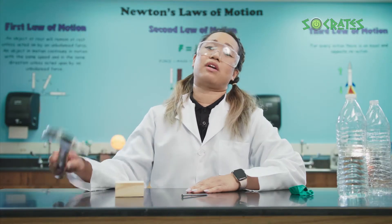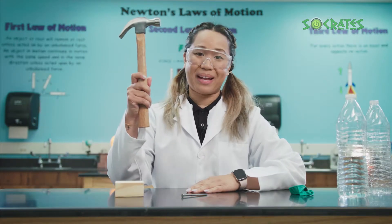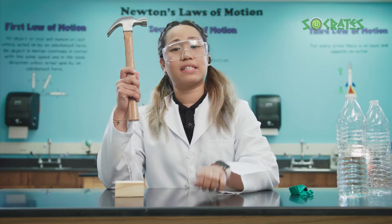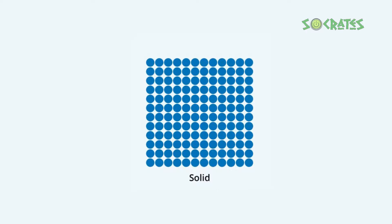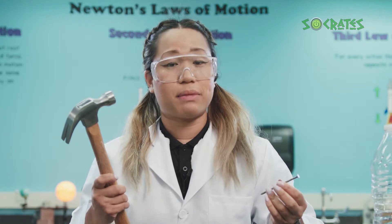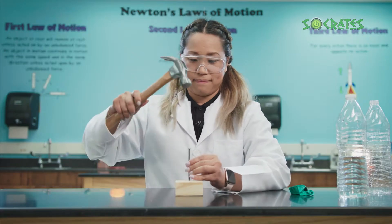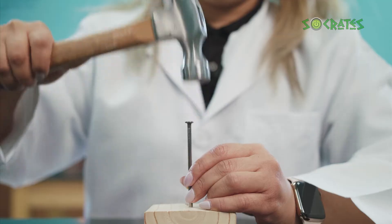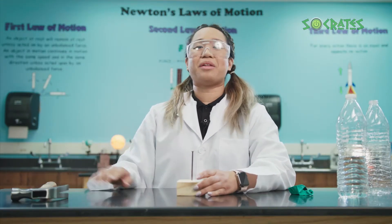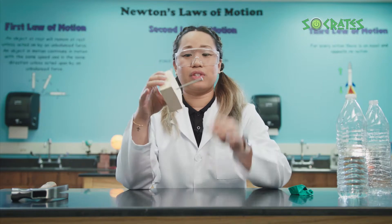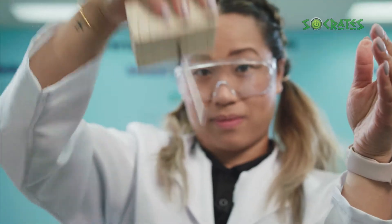First, we're going to use the model of a solid metal hammer and a nail to discuss the particles in a solid. Solid, hard materials are made of atoms that are very attracted to each other. This means they hold on very tight. The molecules and atoms are so close together they don't really move.